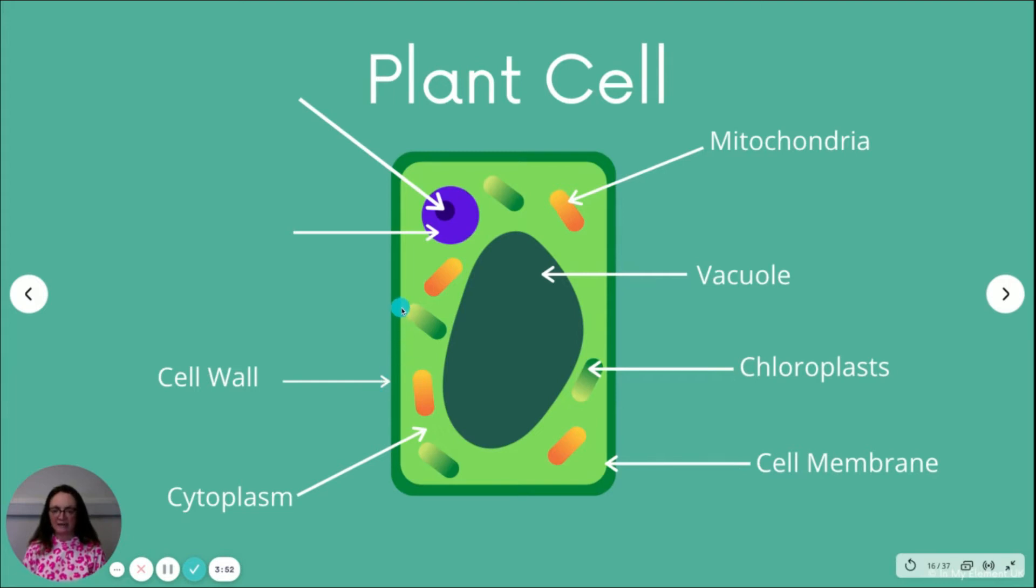And then we've got the cell wall. Notice here the cell walls are really rigid. It's giving it a really firm structure. It's got a regular shape. The nucleus, again we hold the genetic material. So again the plant cell does have DNA. It's not just animal cells that have DNA.